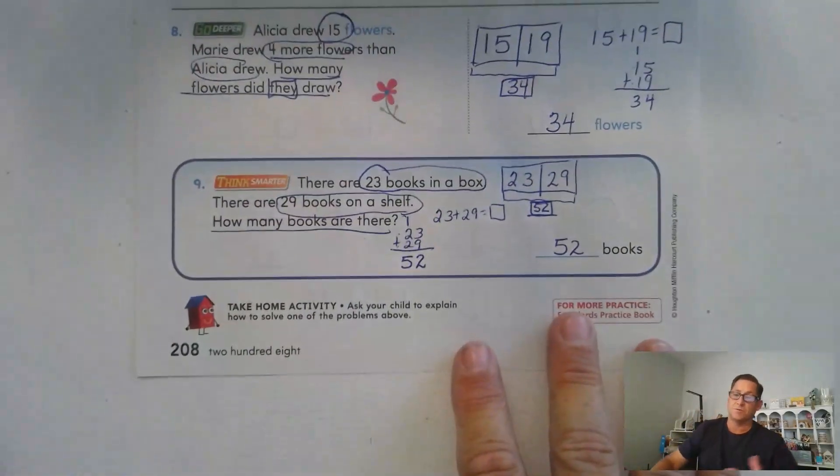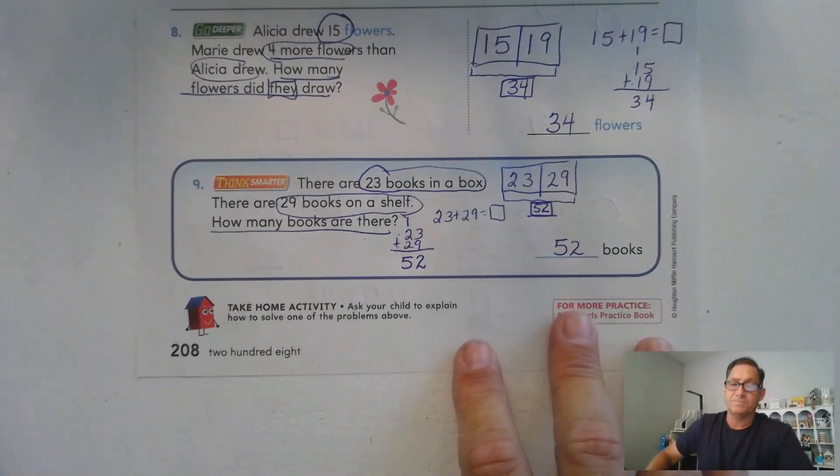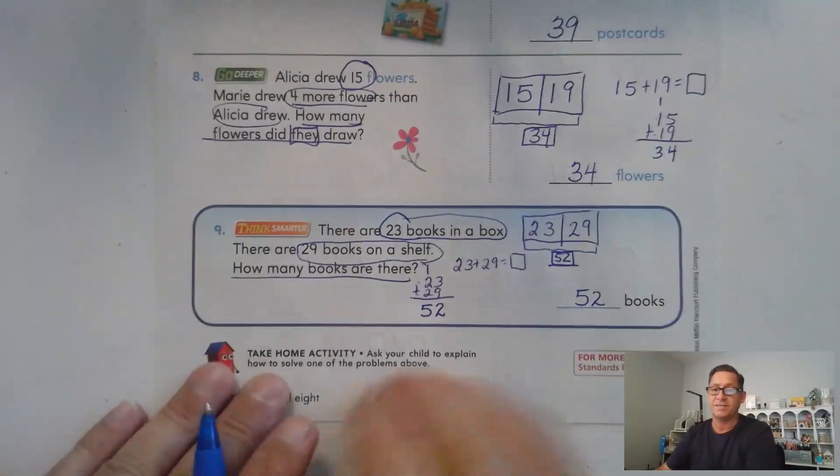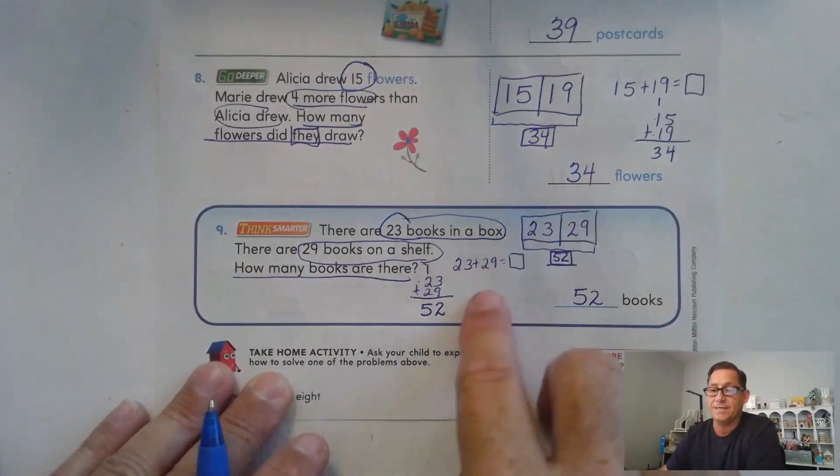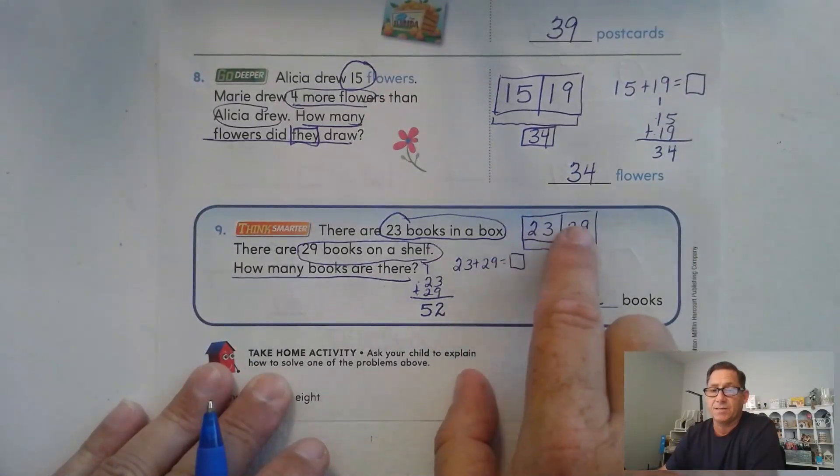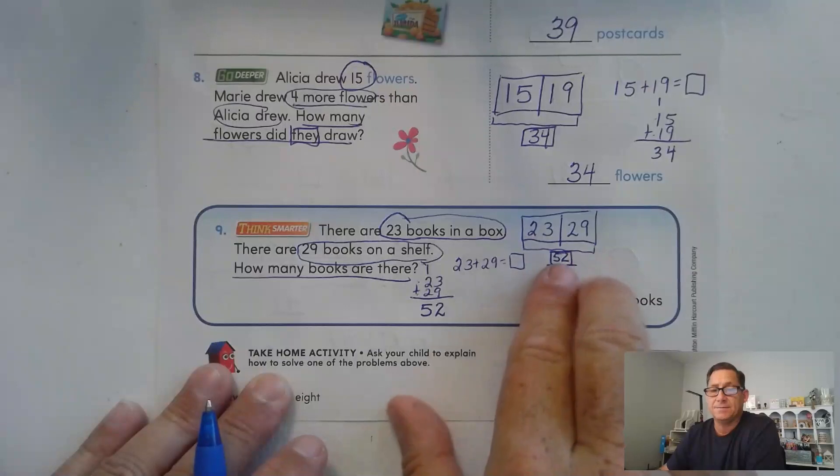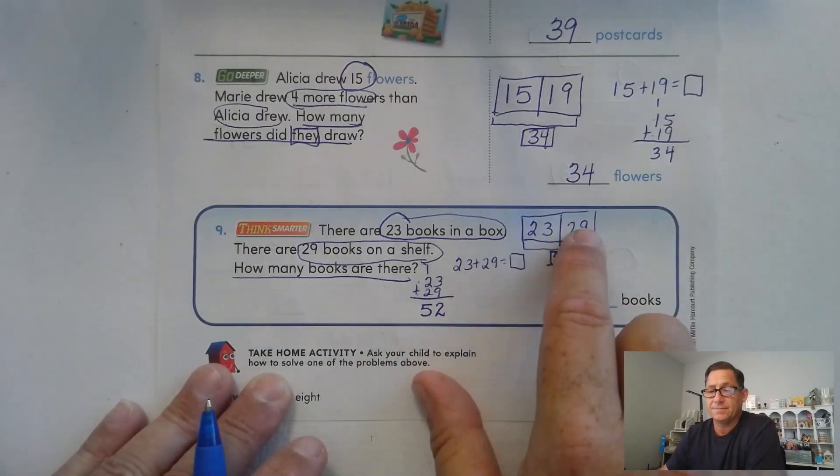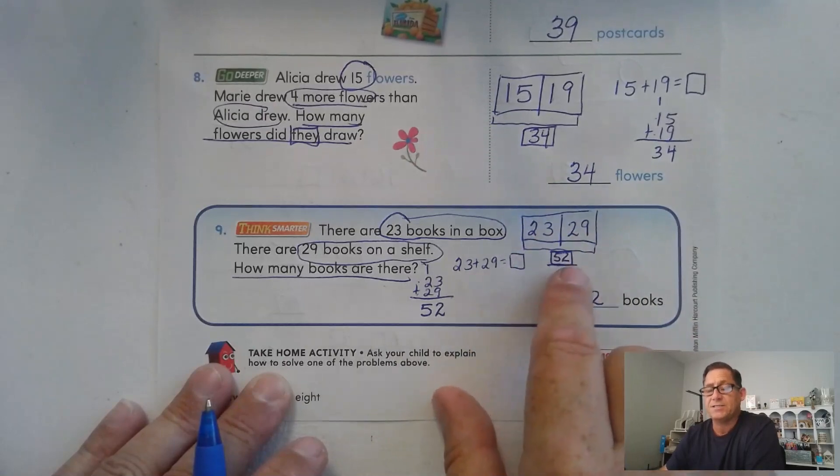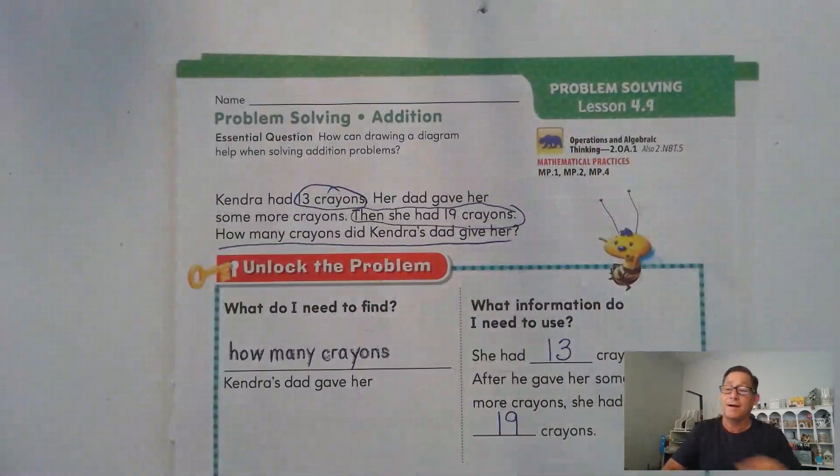So the use of bar models can help us with our addition because we can visually see what we need to do. Remember that when the boxes are right next to each other, that means that we have to combine them to find the total amount. If one of them is missing, we can think of it as a subtraction problem. That's it for lesson 4.9. So until our next lesson, I will see you soon.